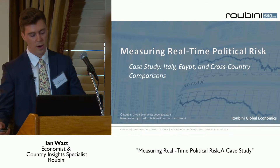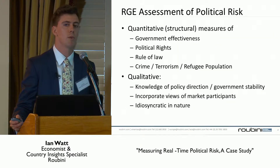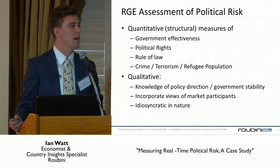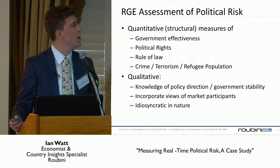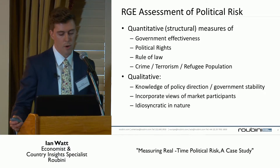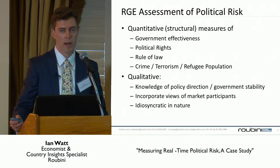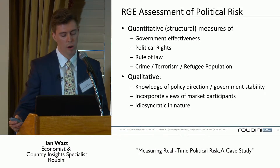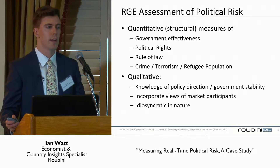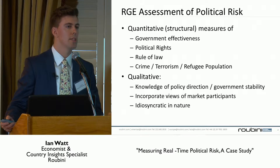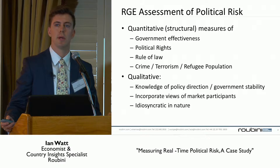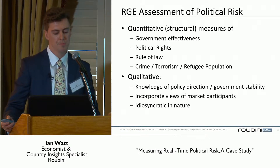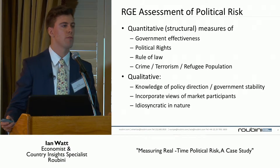One thing we've been trying to figure out how to do well is assess political risk. When we were put in contact with the people at Ravenpack, I was quite interested in figuring out how we could use this news data to measure political risk in real time. Our current quantitative model is very much structural in nature — evaluating political risk by looking at things like government effectiveness, political rights, rule of law, crime, terrorism, and refugee data. But that is, by nature, slow-moving information, moving on a quarterly basis at best, sometimes yearly.